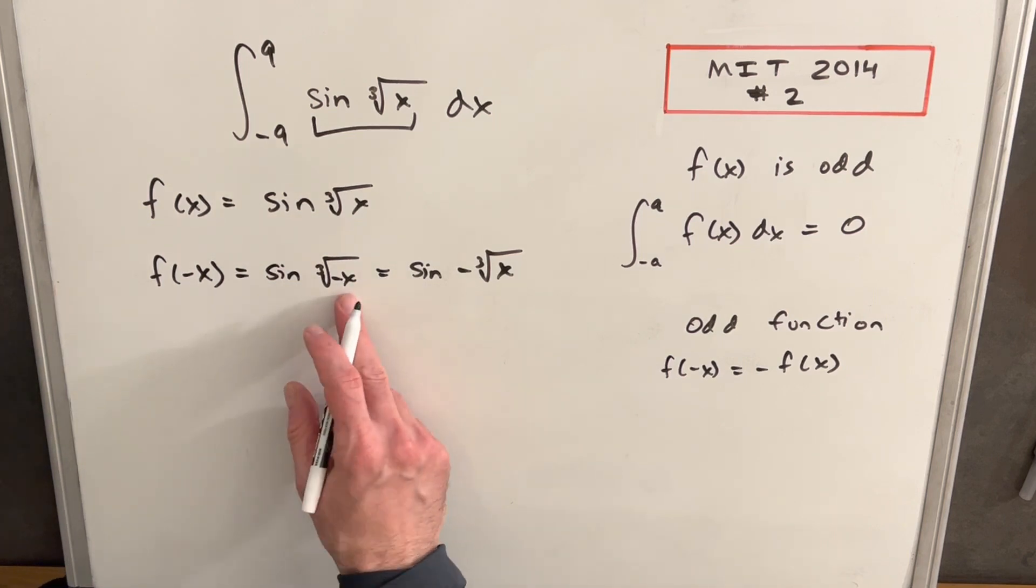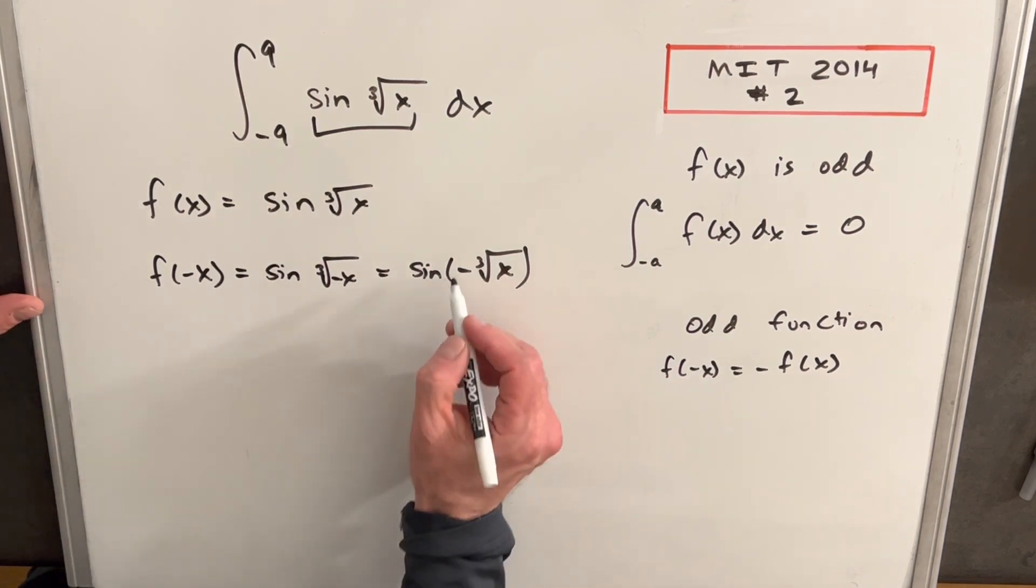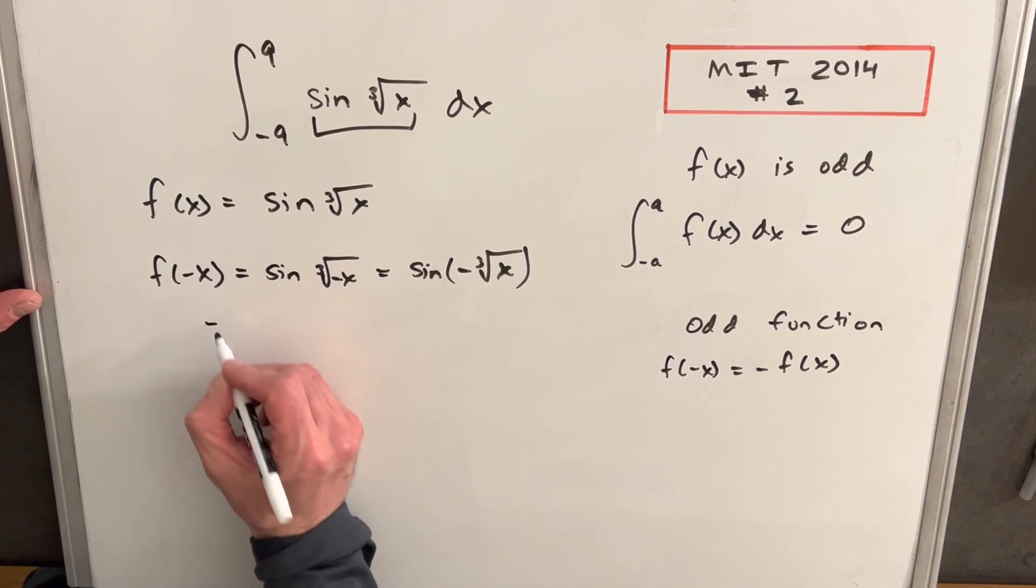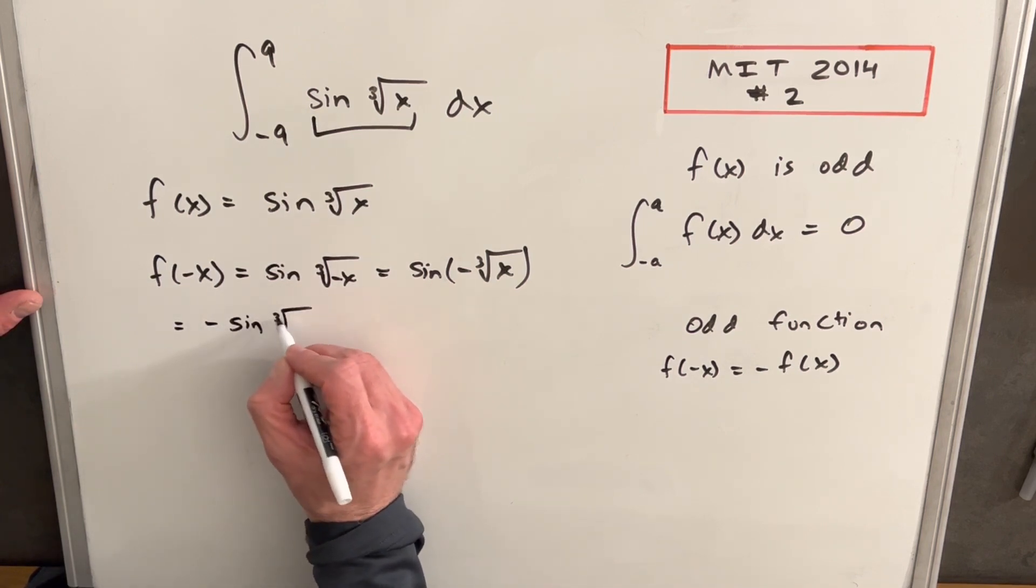Just noticing the cube root of negative one is minus one, or minus one cubed is minus one. And then assuming we already know that sine is an odd function, I'm not going to prove that, but then we can take the minus out front so we're going to have this equal to minus sine cube root of x.